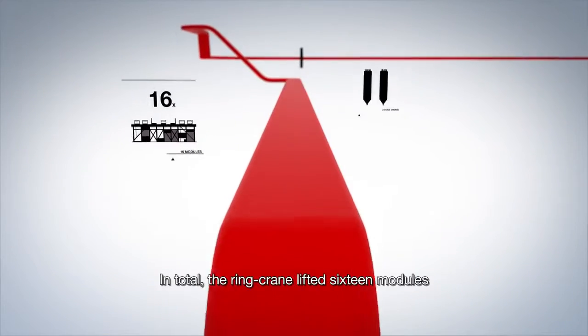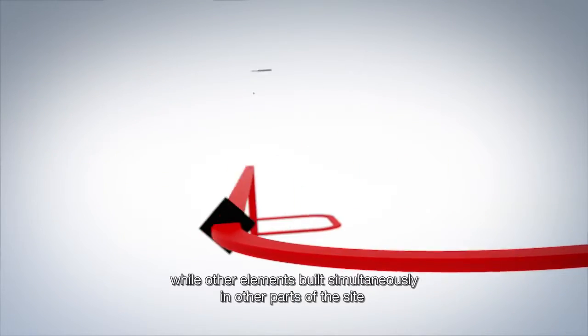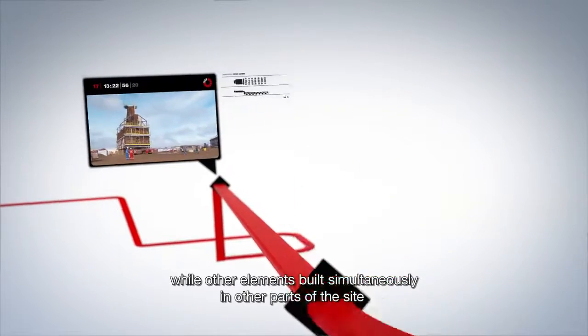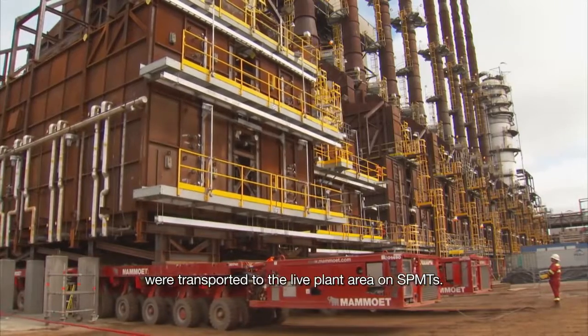In total, the ring crane lifted 16 modules and two coke drums into place, while other elements built simultaneously in other parts of the site were transported to the live plant area on SPMTs.